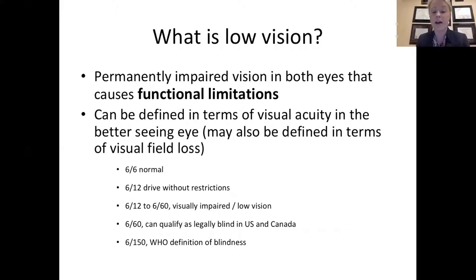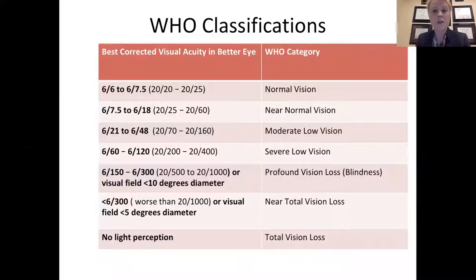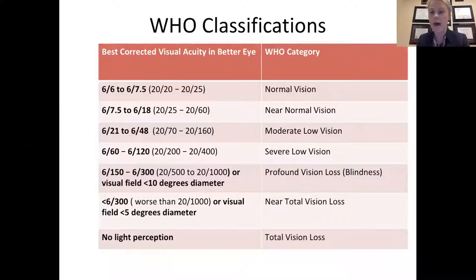We think of 6/6 as normal or perfect vision. 6/12 allows driving without restrictions. Between 6/12 and 6/60 a patient is considered visually impaired or low vision. At 6/60 and beyond we get into legal blindness — either the US/North American definition or the WHO definition of 6/150 or 2/500. The WHO groups visual impairment into moderate, severe, profound, and total categories because patients in each group have different visual needs and functional demands.